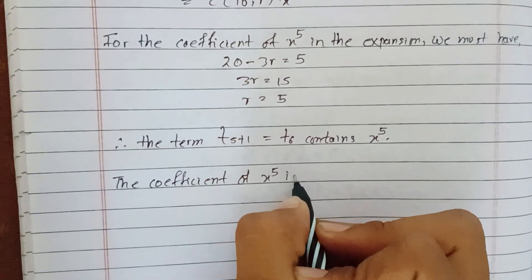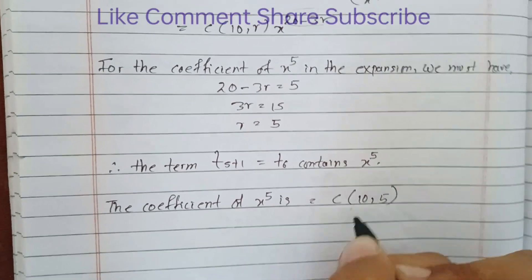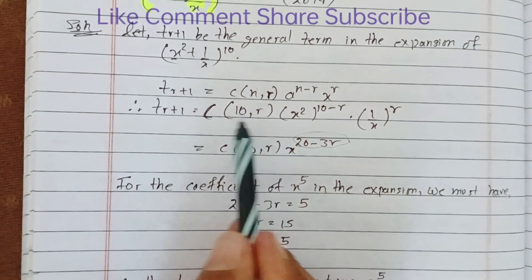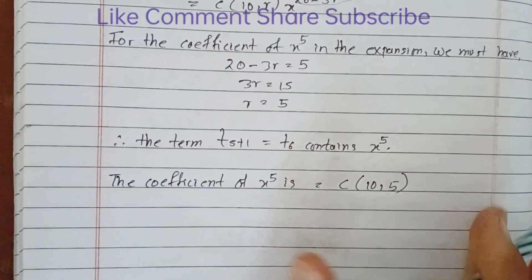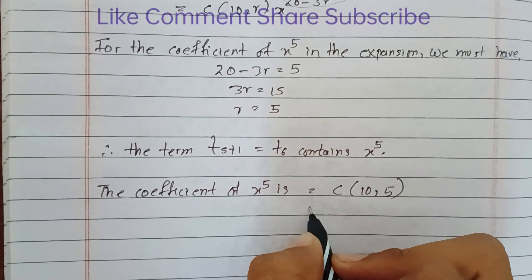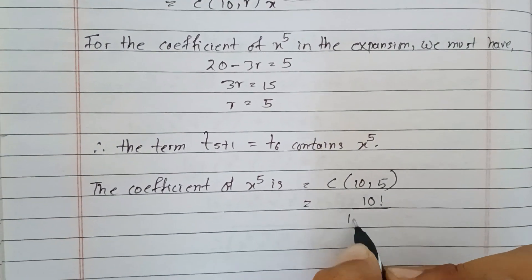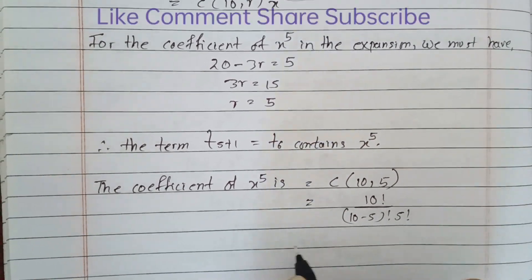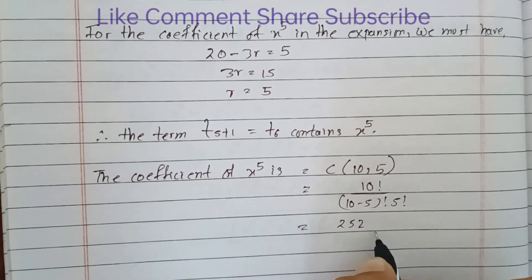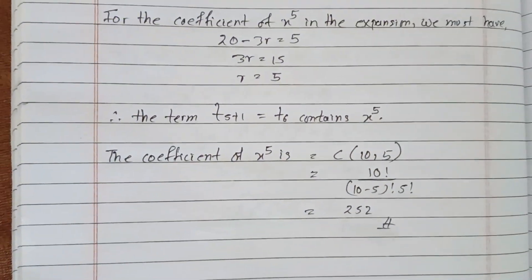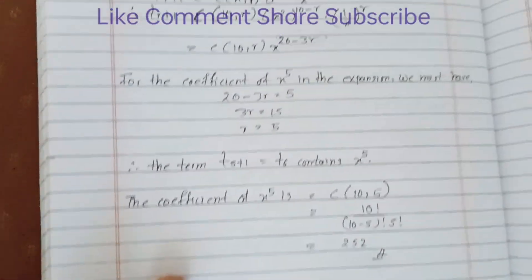The coefficient of x^5 equals C(10,5), which equals 252. This is our final answer.